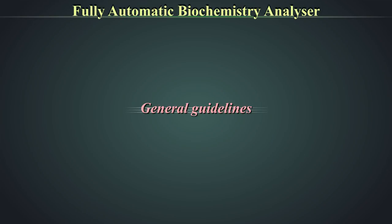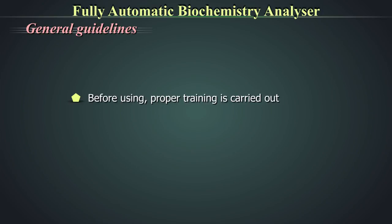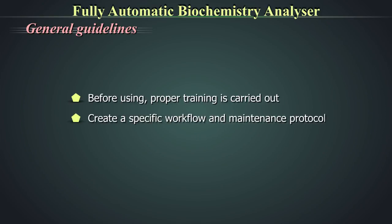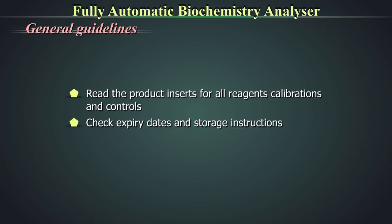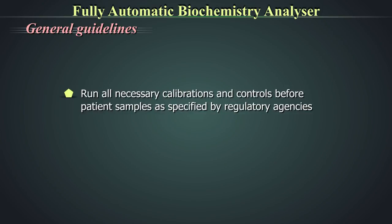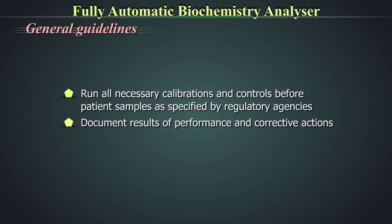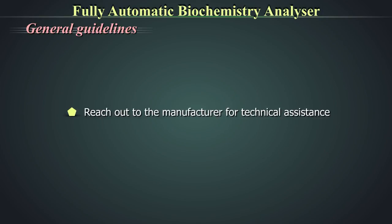General guidelines: Before using an automated instrument, proper training of all users is carried out. Read the user's manual and create a specific workflow and maintenance protocol for the lab. Read the product inserts for all reagent calibrators and controls; check their expiry dates and storage instructions. Run all necessary calibrations and controls before patient samples as specified by regulatory agencies. Document the results of performance and corrective actions taken. Reach out to the manufacturer for technical assistance as required. Please refer to the training module on equipment management.